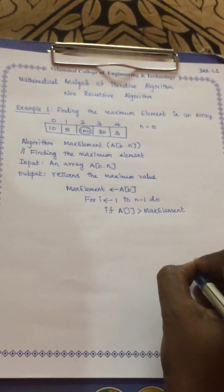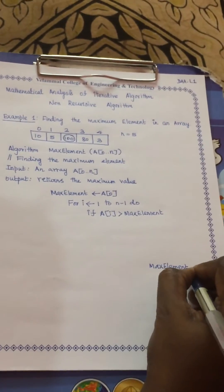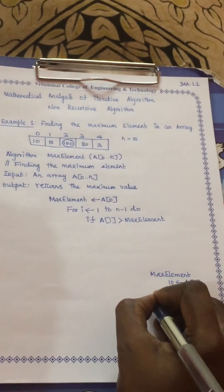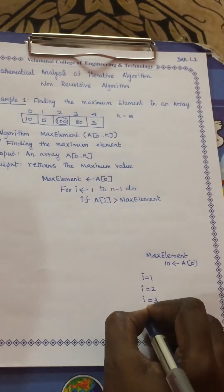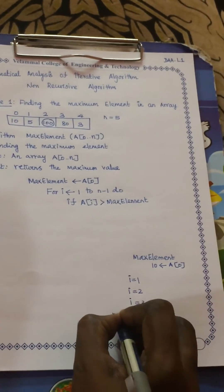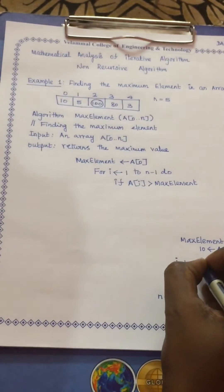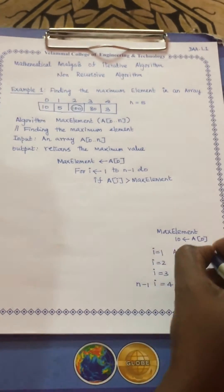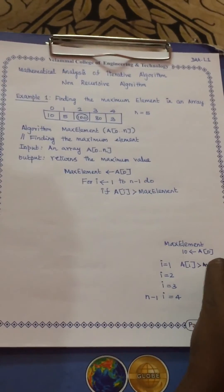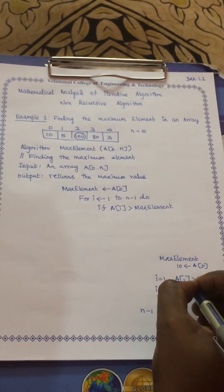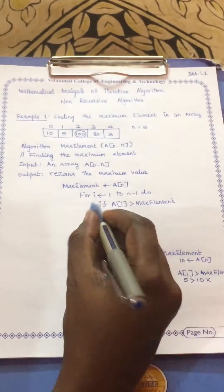Initially, the maximum element is 10, which is a[0]. Now i executes for n minus 1 times — so 4 is the n minus 1 value. For each iteration, we check if a[i] is greater than the current maximum element. When i equals 1, a[1] is 5, and we check if it is greater than 10. The condition fails because 10 remains the maximum.